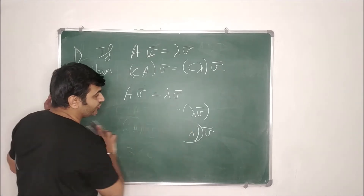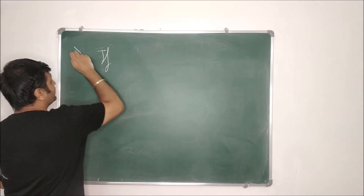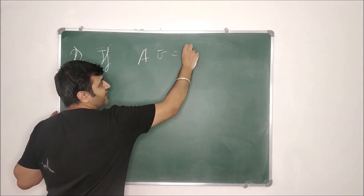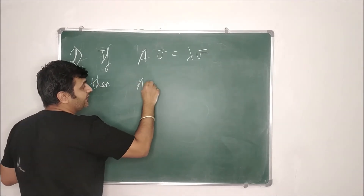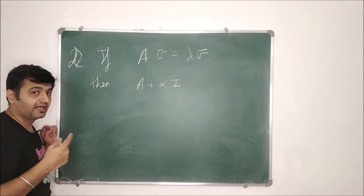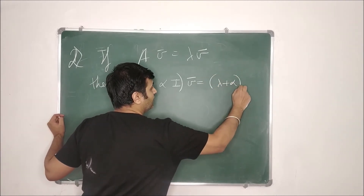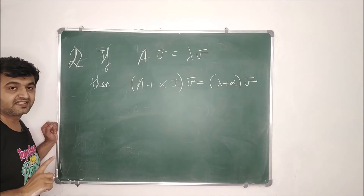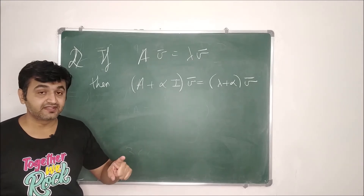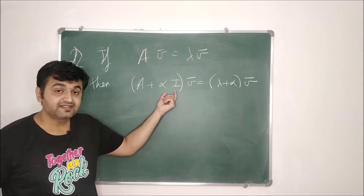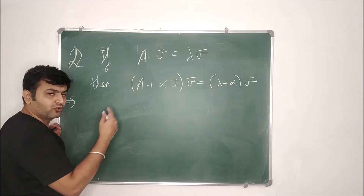That is the first result. Now the second result: if lambda is the eigenvalue and v̄ is the eigenvector of a square matrix A, and you form A + alpha·I (where I is the identity matrix), then the eigenvectors remain the same but the eigenvalue becomes lambda + alpha. This holds only when you add a scalar multiple of the identity matrix, not any arbitrary matrix.